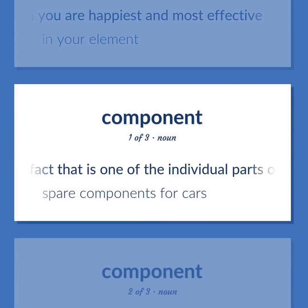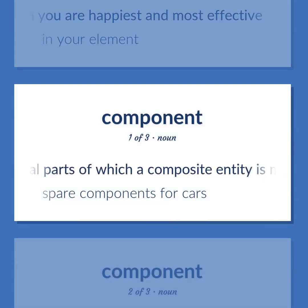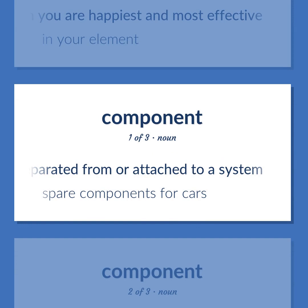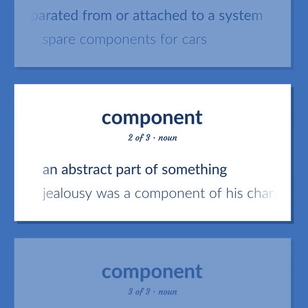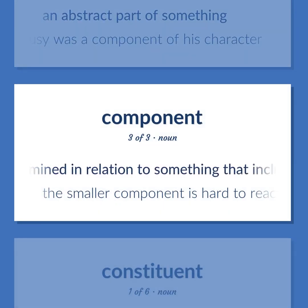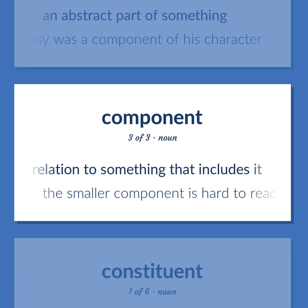An artifact that is one of the individual parts of which a composite entity is made up, especially a part that can be separated from or attached to a system. Spare components for cars. An abstract part of something. Jealousy was a component of his character. Something determined in relation to something that includes it. The smaller component is hard to reach.